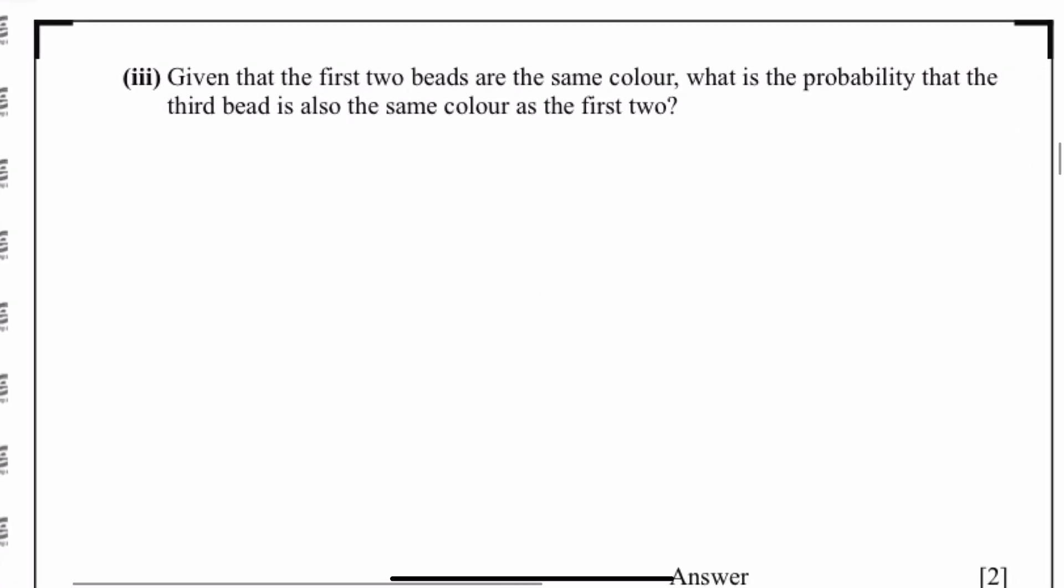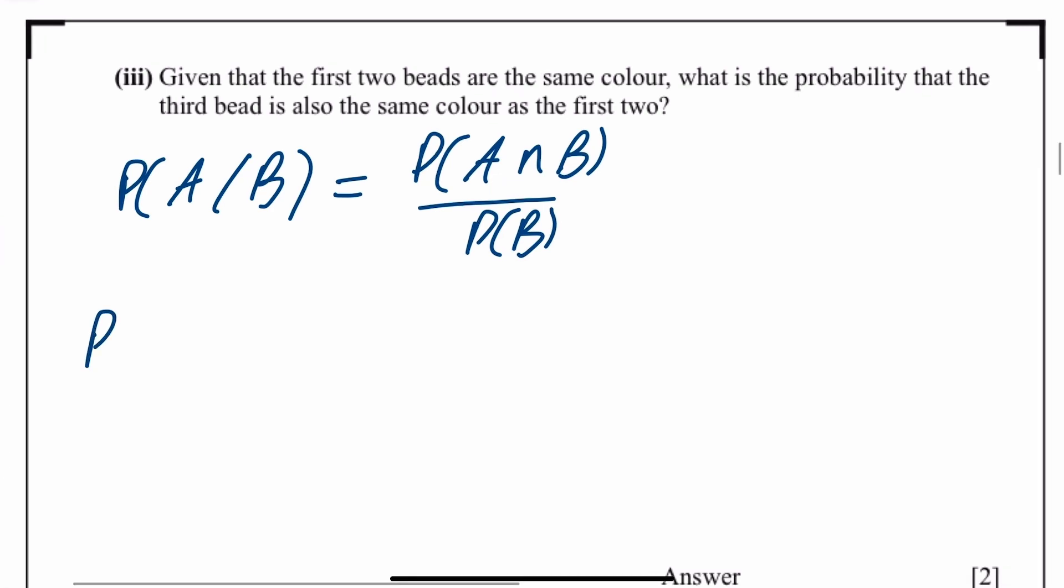Part 3 says, given that the first two beads are the same, what is the probability that the third bead is also the same as the first two? This is conditional probability. So using the probability of A given B, which is equal to probability of A and B divided by the probability of B. So given that the first two are same, find the probability that the third bead is also the same. So all three the same.